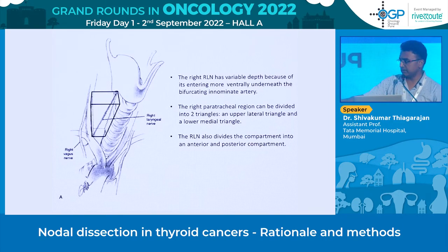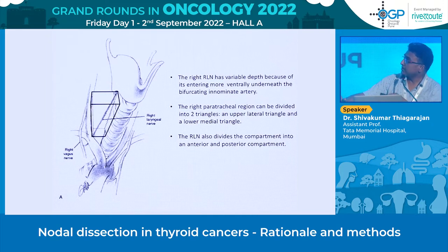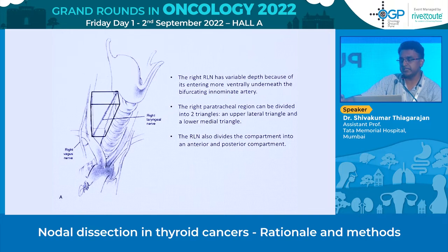The central compartment on the right side is slightly different from the left side. On the right side the central compartment is more like a three-dimensional space, whereas on the left side it is more of a two-dimensional space. On the right side, the recurrent laryngeal nerve comes around the subclavian and as it ascends it travels from lateral to medial, creating a space both anterior and posterior to the recurrent laryngeal nerve.